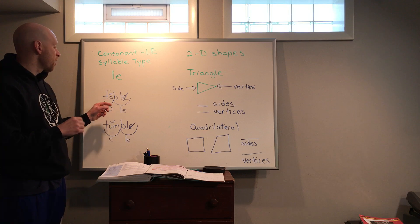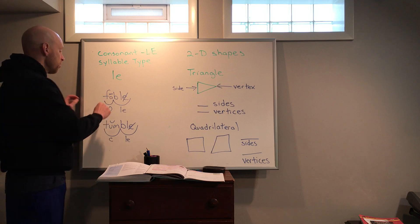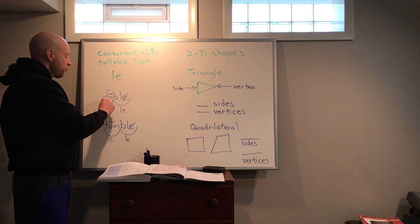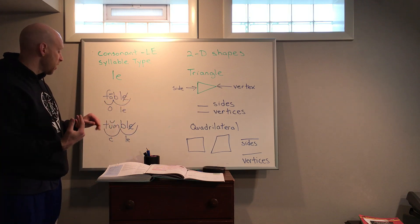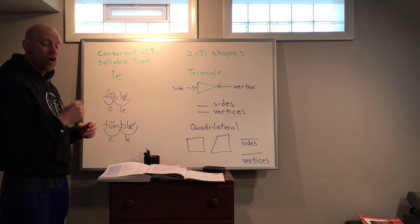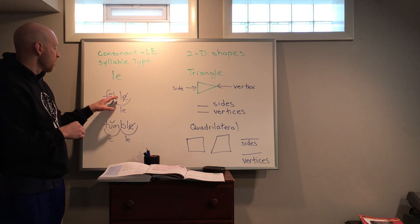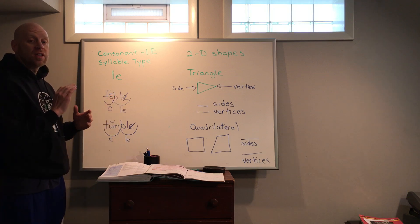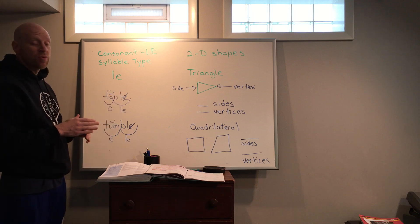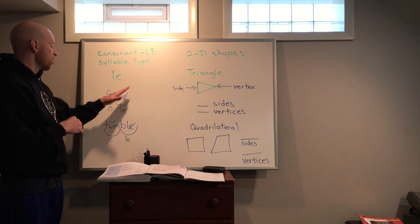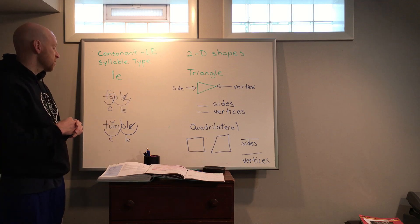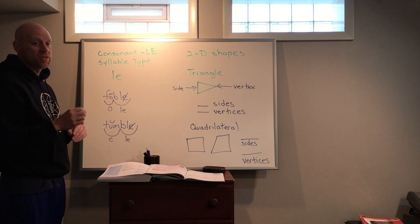We'll scoop the first syllable, so FA-fable. We know that's a long A so we mark it with a macron. It's an open vowel syllable. That BLE is there. We don't hear that E. It's a silent E in this consonant type, so we X out the E because it means it's silent and we put LE there.